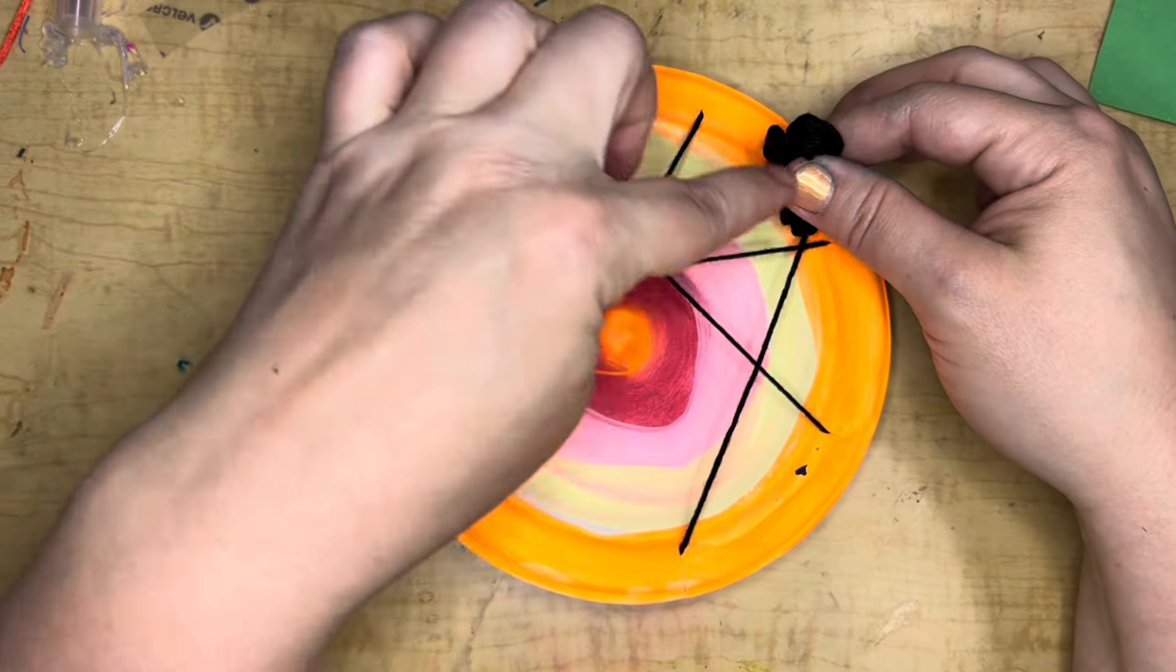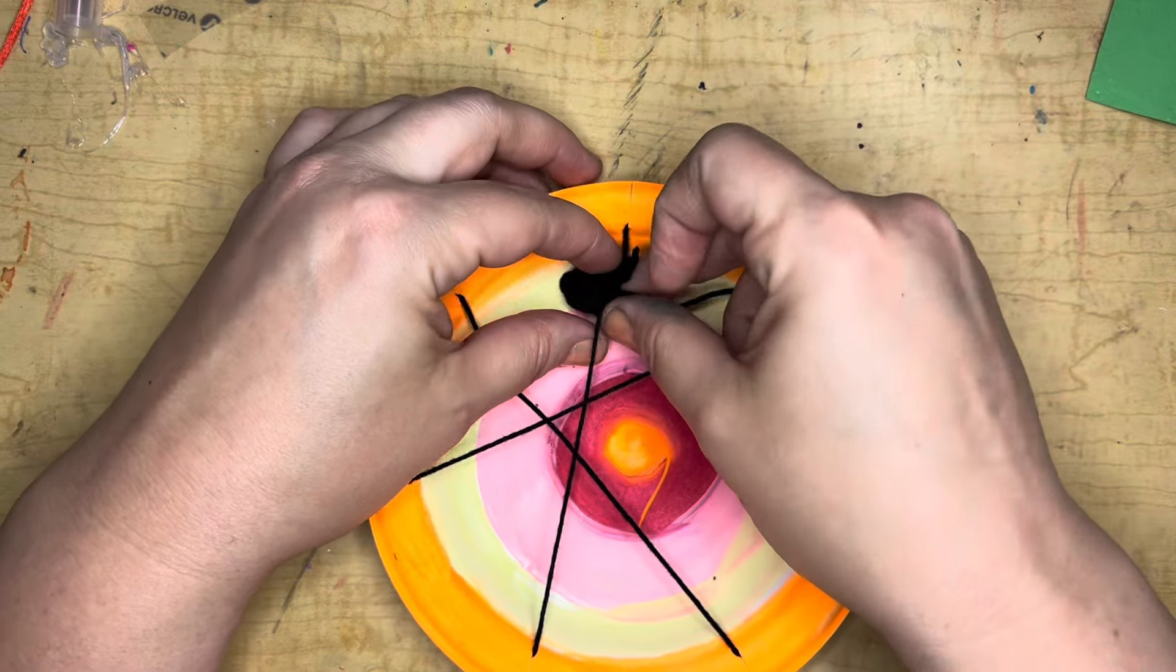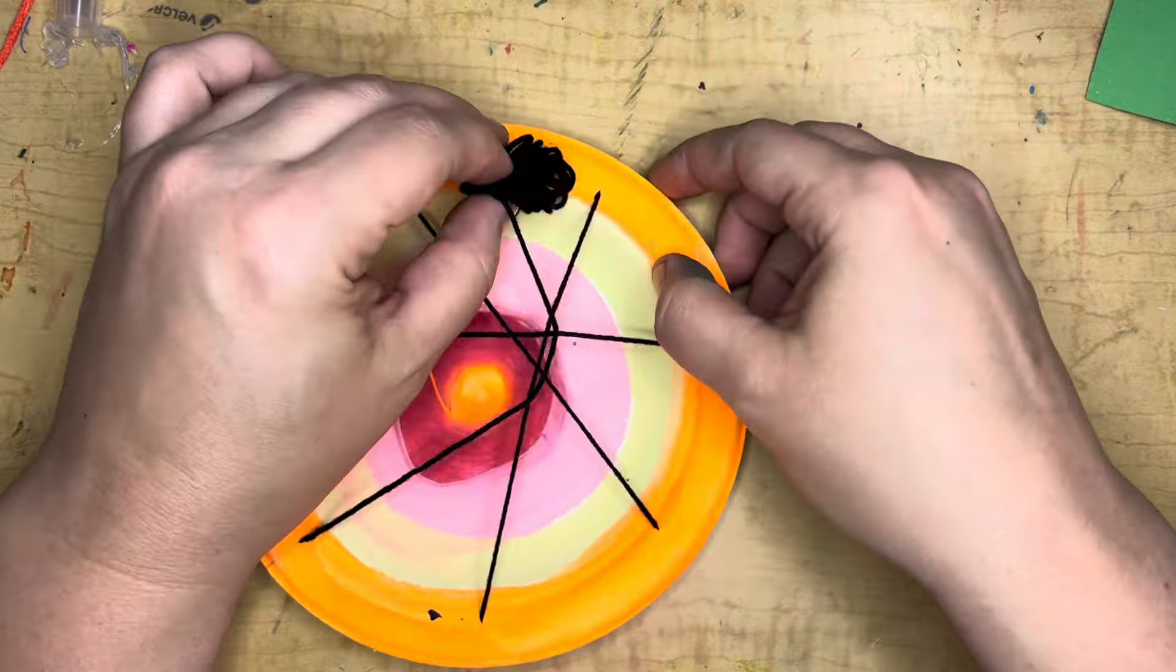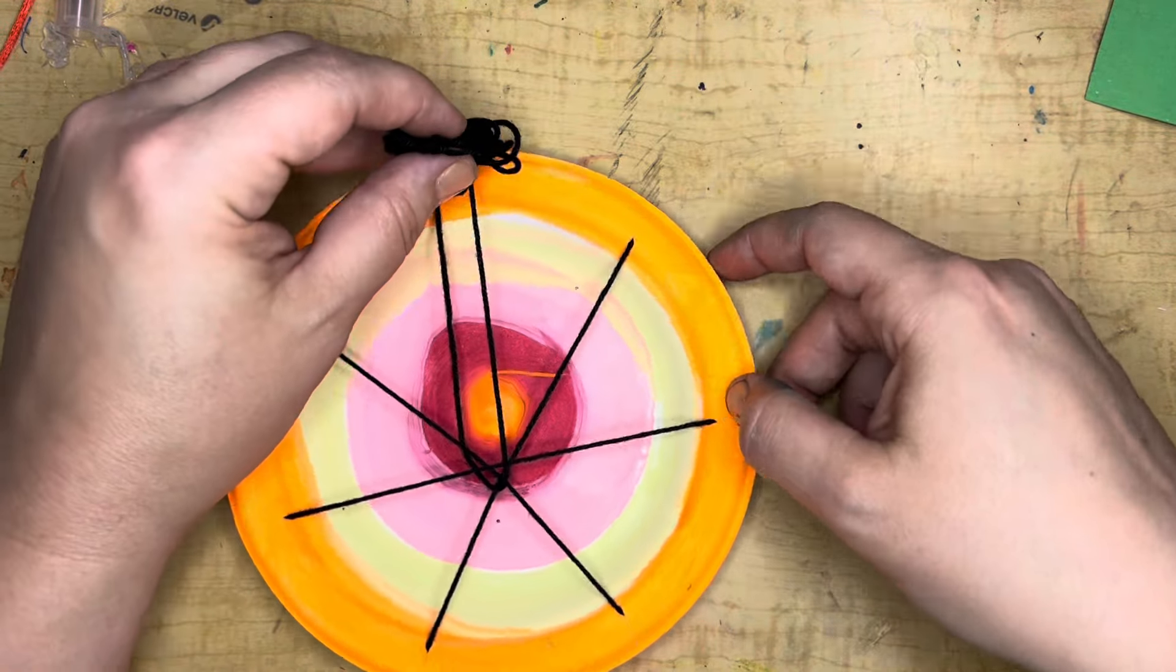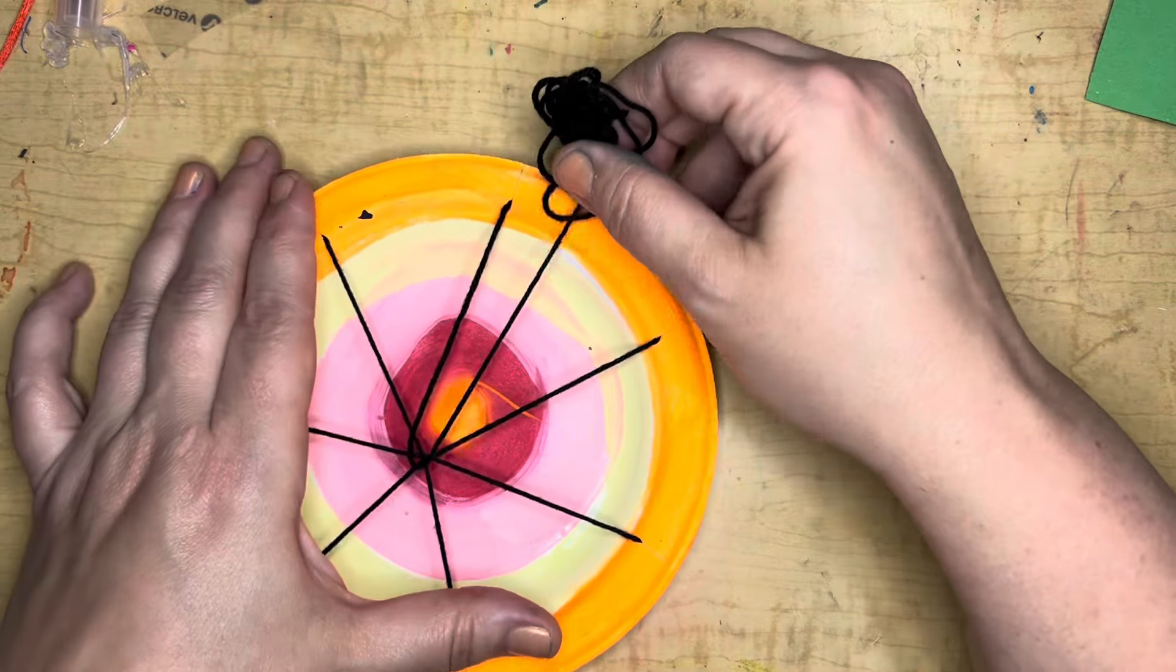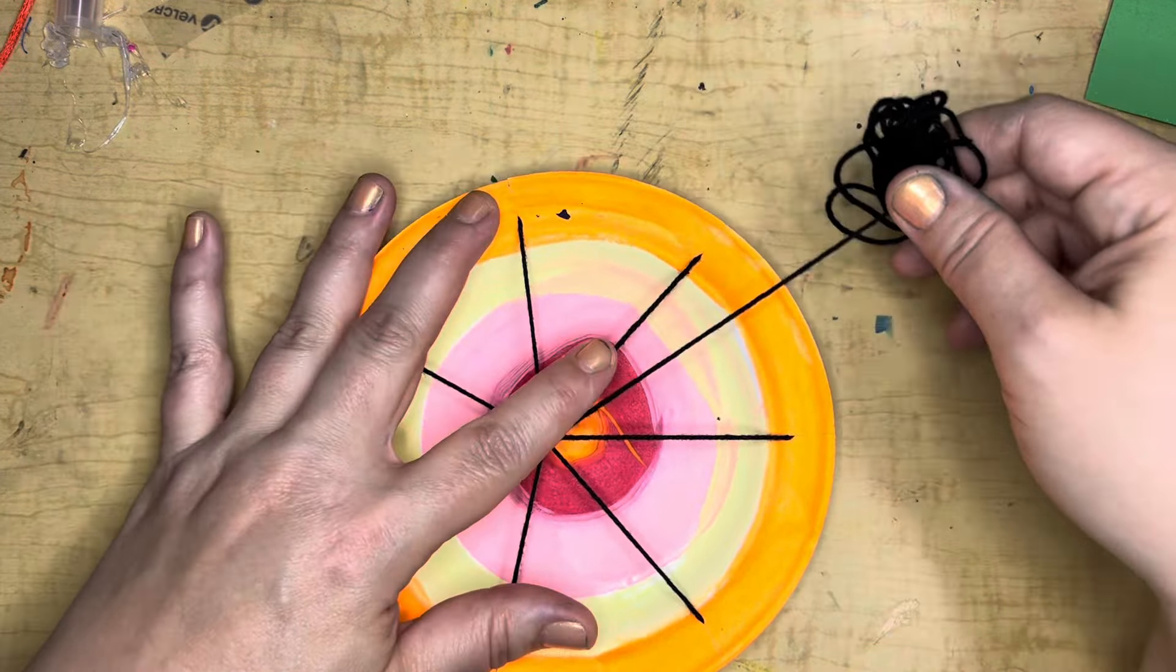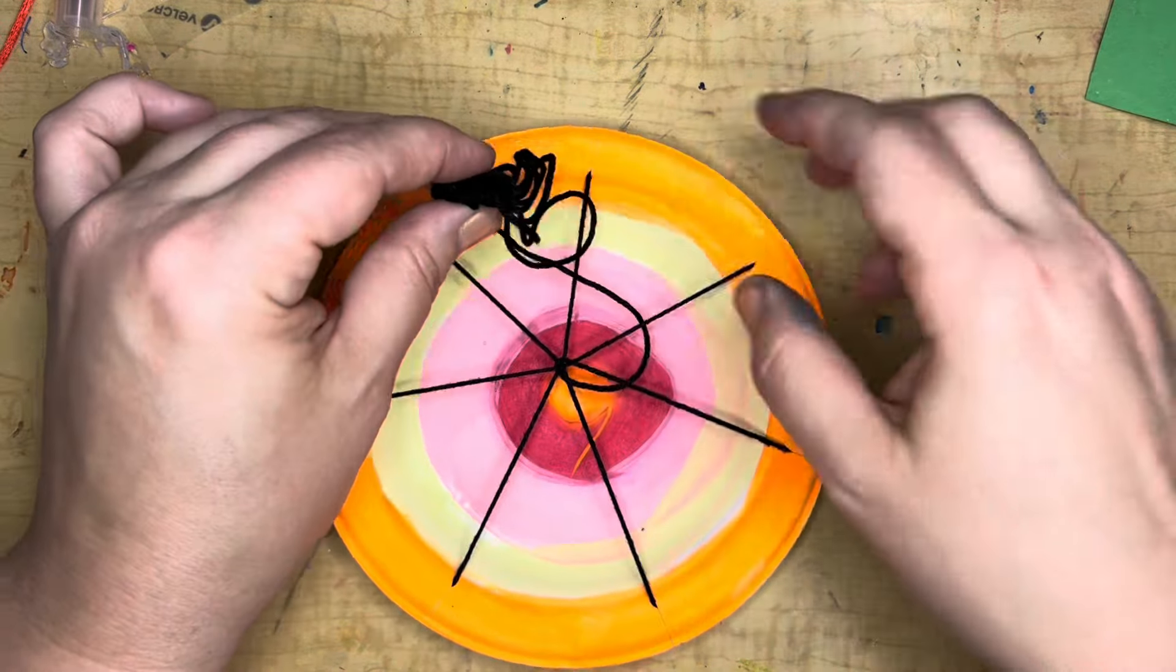I like to go counterclockwise. You can also go clockwise, but I like to go counterclockwise because I'm right-handed. I'm going to start by going over the first spoke and under the next one. Over, then under, then over, then under. When I get back to where I started, I can give a gentle tug to get that hub more into the center and continue.